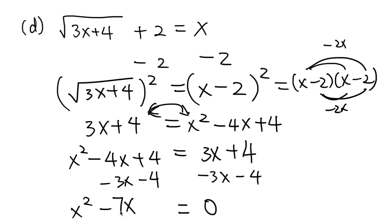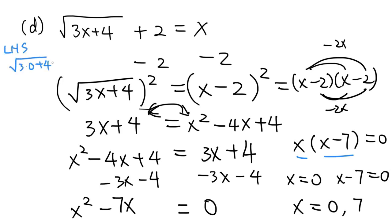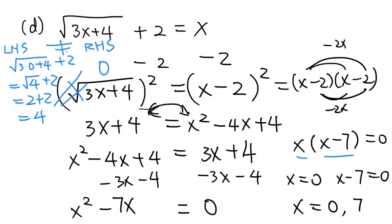x is a common factor of the left-hand side, so if you factor it out you get x times x minus 7 equals 0. Since two factors multiply to 0, either one of the factors equals 0. So x equals 0 or x minus 7 equals 0, giving solutions x = 0 or x = 7. Now don't forget to check these numbers. Plugging in x = 0: the left-hand side becomes square root of 4 plus 2, which is 4, but the right-hand side is 0. So 4 is not equal to 0, meaning x = 0 is not a solution.